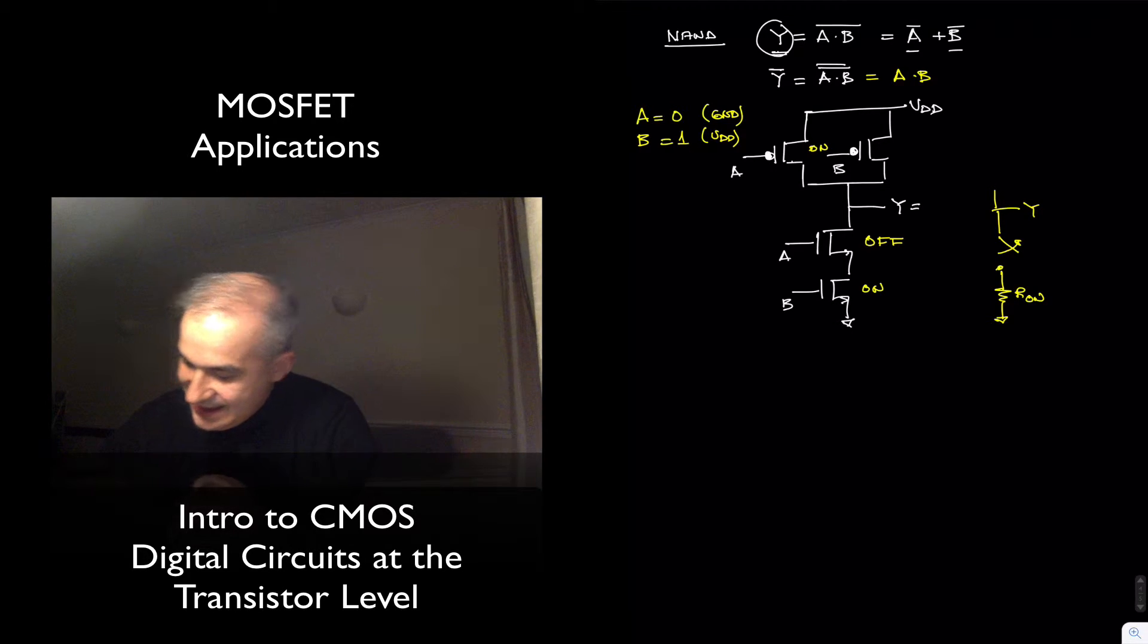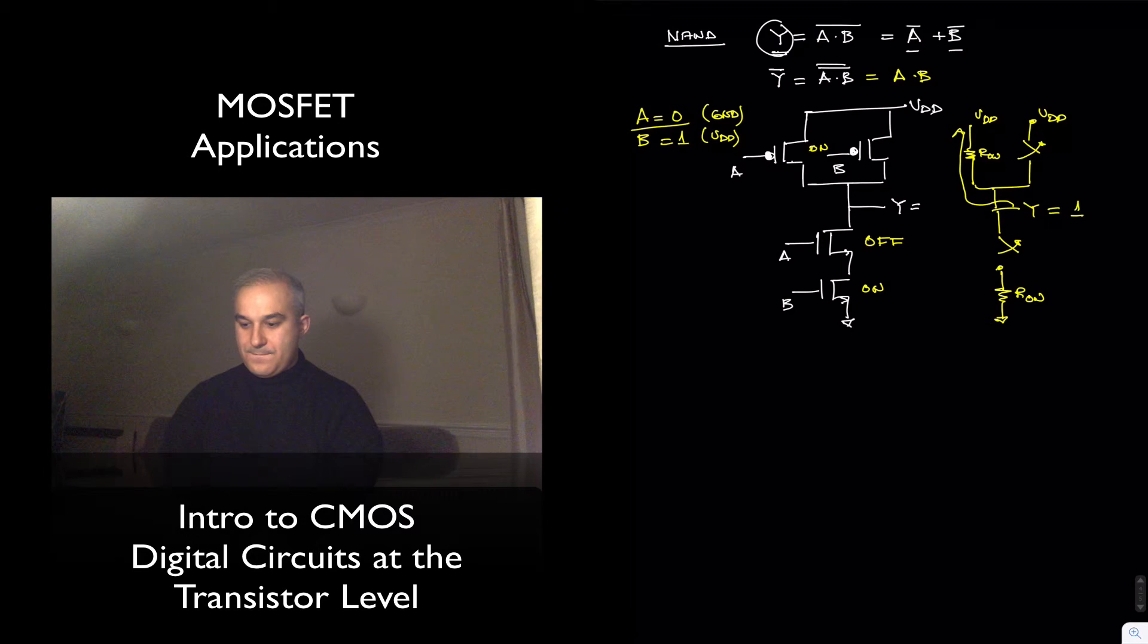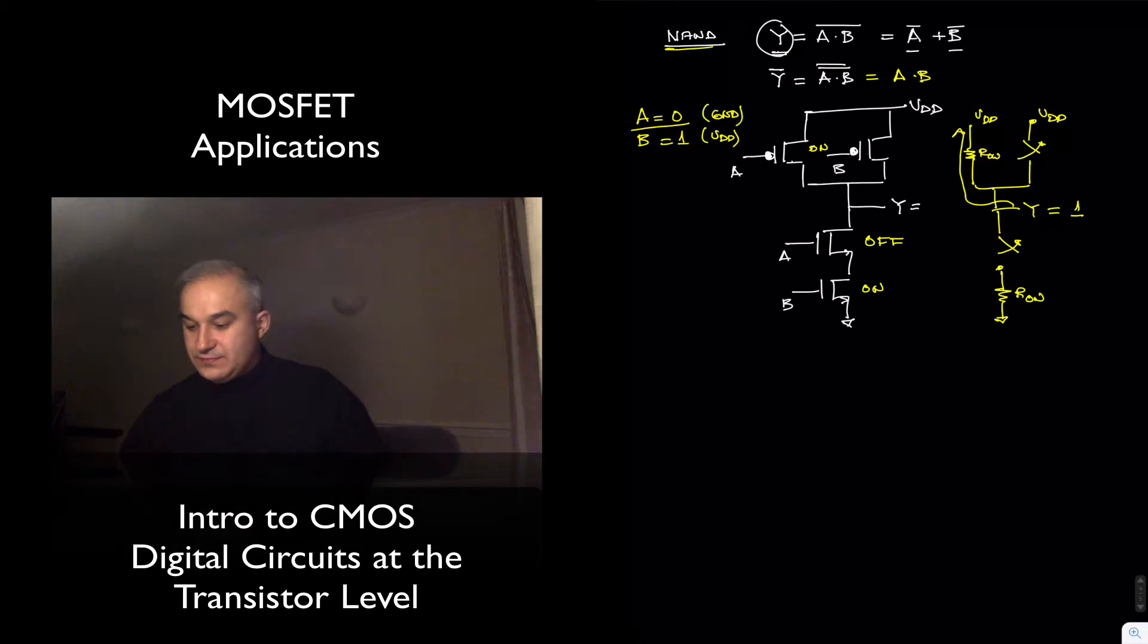And at the top, A, since we have a low voltage, this PMOS is conducting, we have a path to VDD, and B is off. What is Y equal to in this case? Well, it gets pulled up to VDD, and we get a logical one. So if you do the truth table, you realize that we have implemented a NAND function.